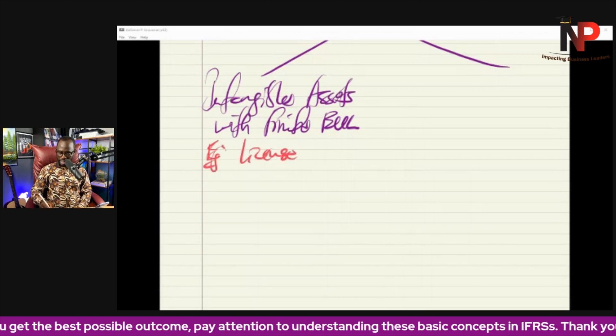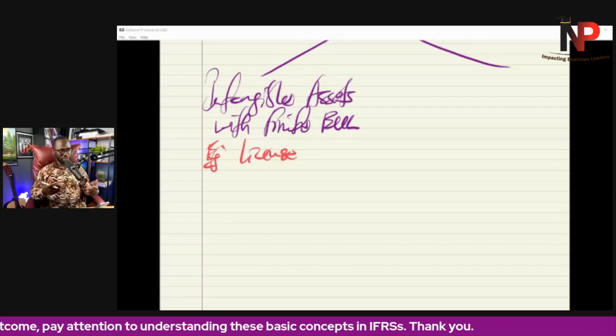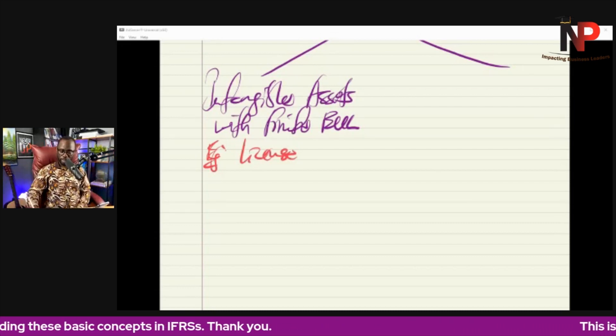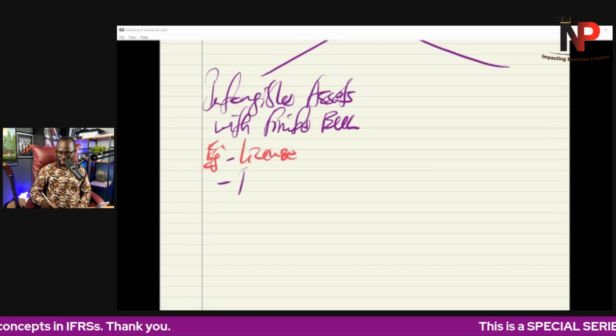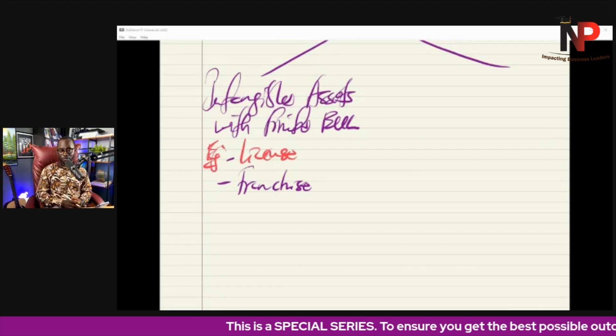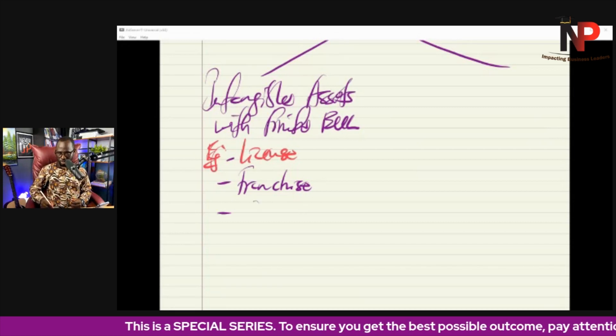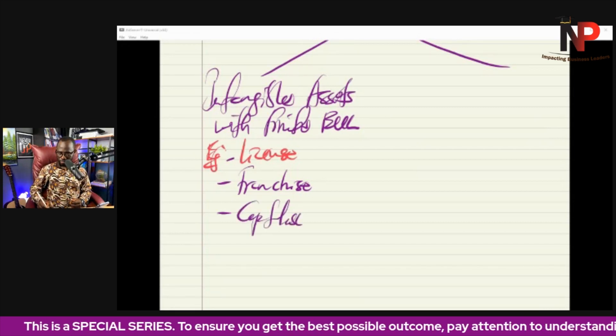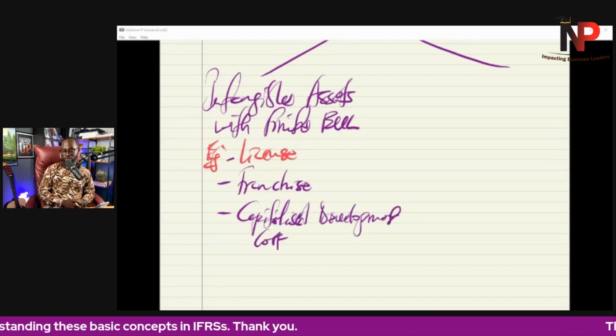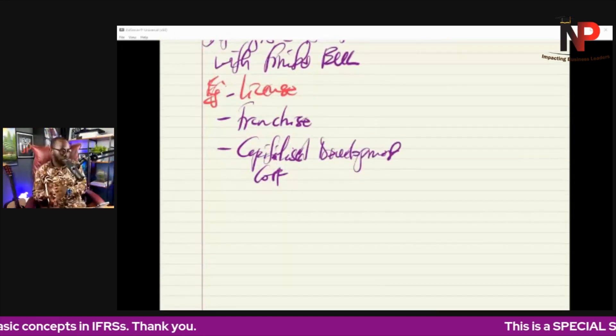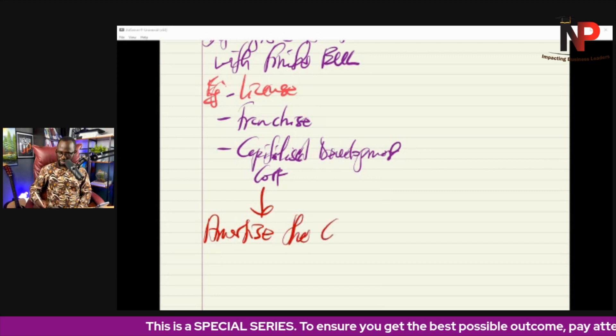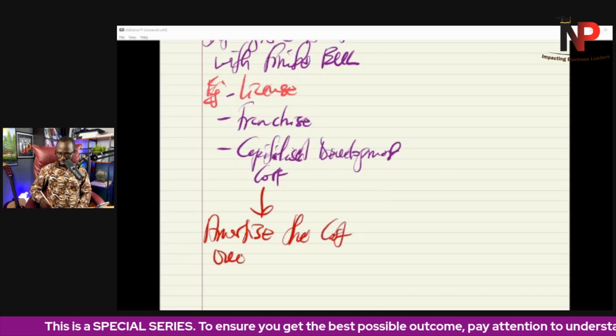We have intangible assets with finite economic useful life, meaning we know the economic useful life. Like example is what I mentioned earlier, a license. License has economic useful life. When you take a license, it is supposed to be for a period and you have to renew it. So license will have a finite life. The franchise that I told you about earlier would have a finite life. Development costs that we have capitalized will have a finite life. So capitalized development costs would have a finite life. For these kind of intangible assets, what we say is that we amortize it. We amortize the cost over the economic useful life.